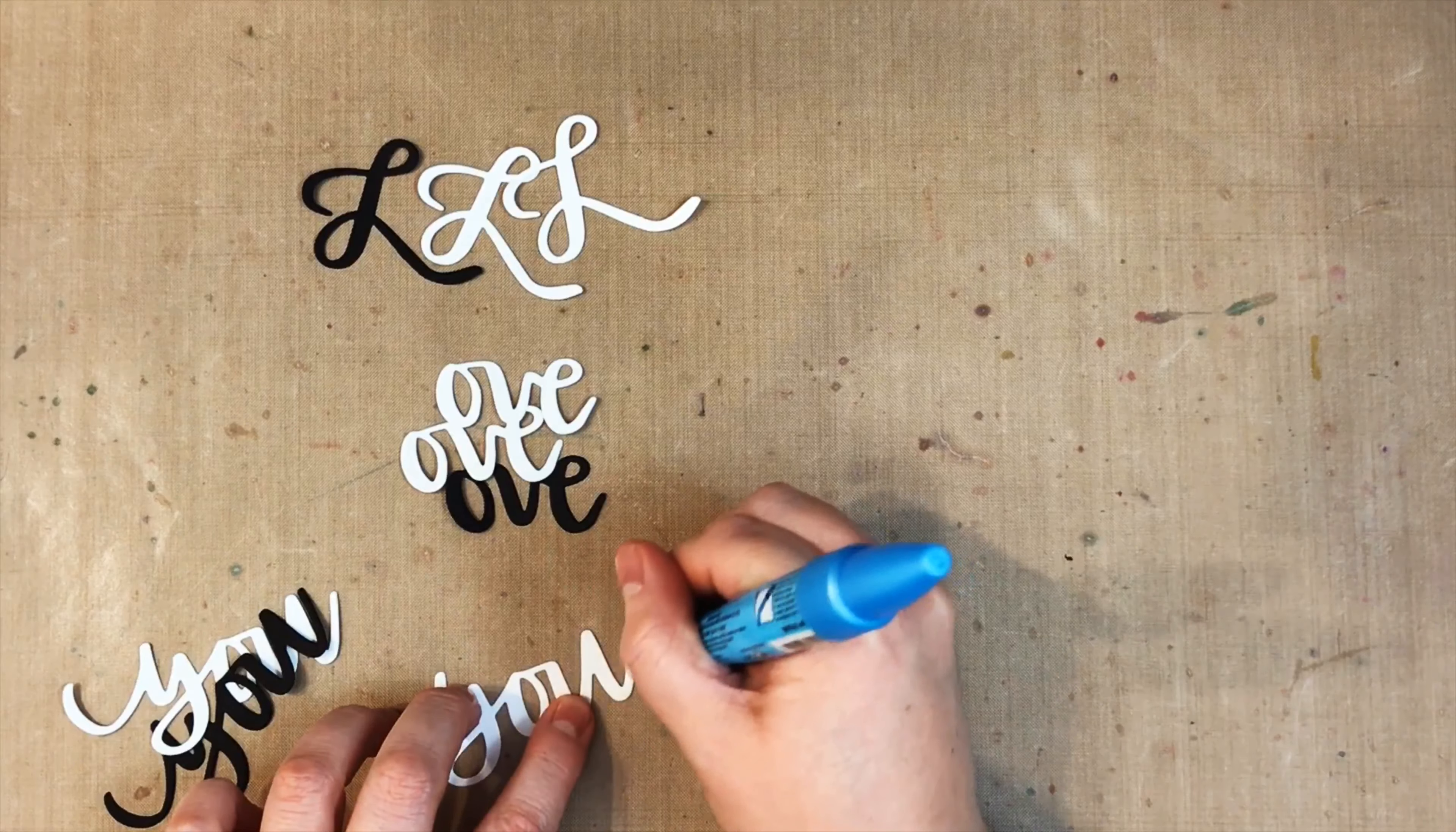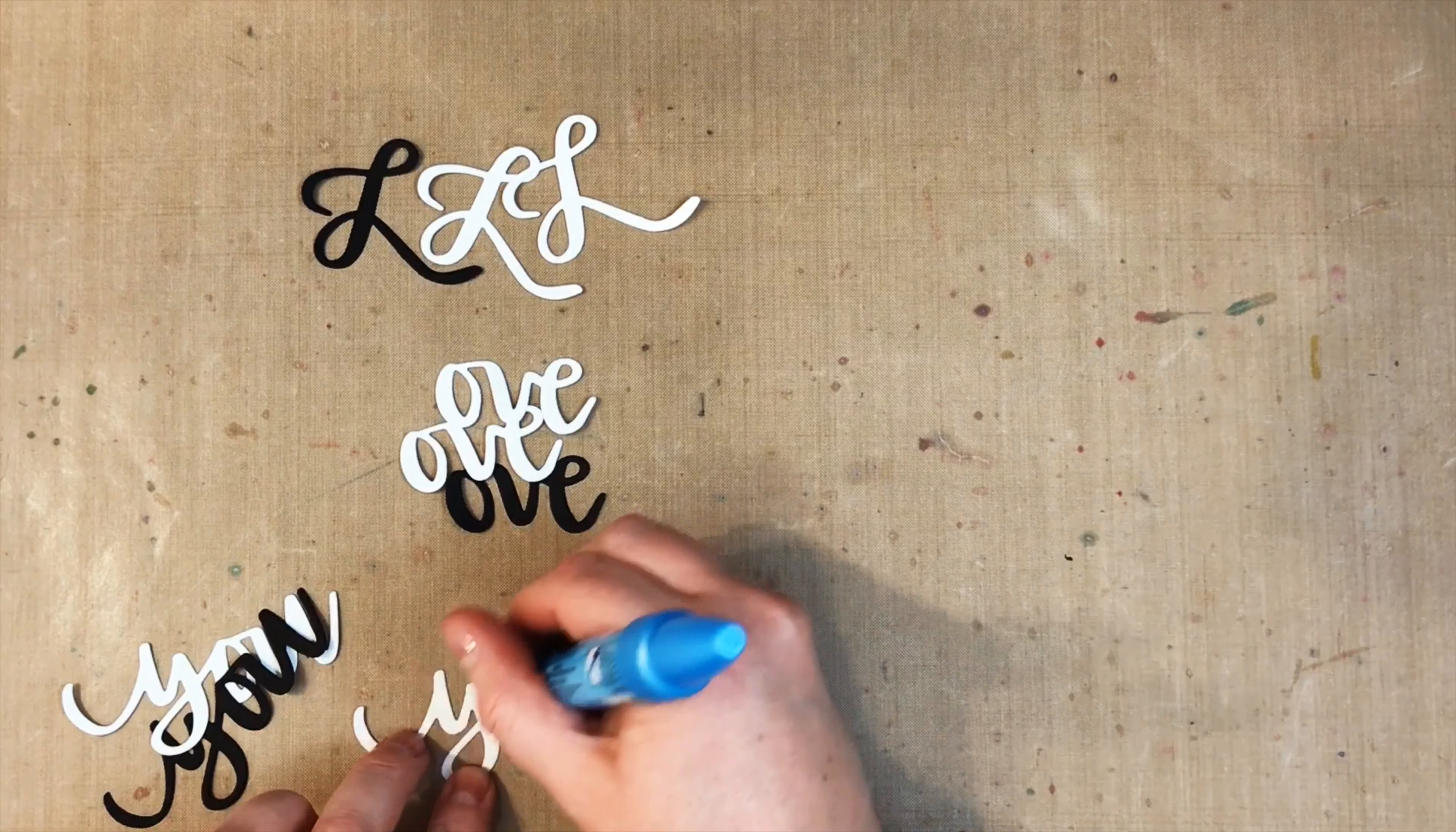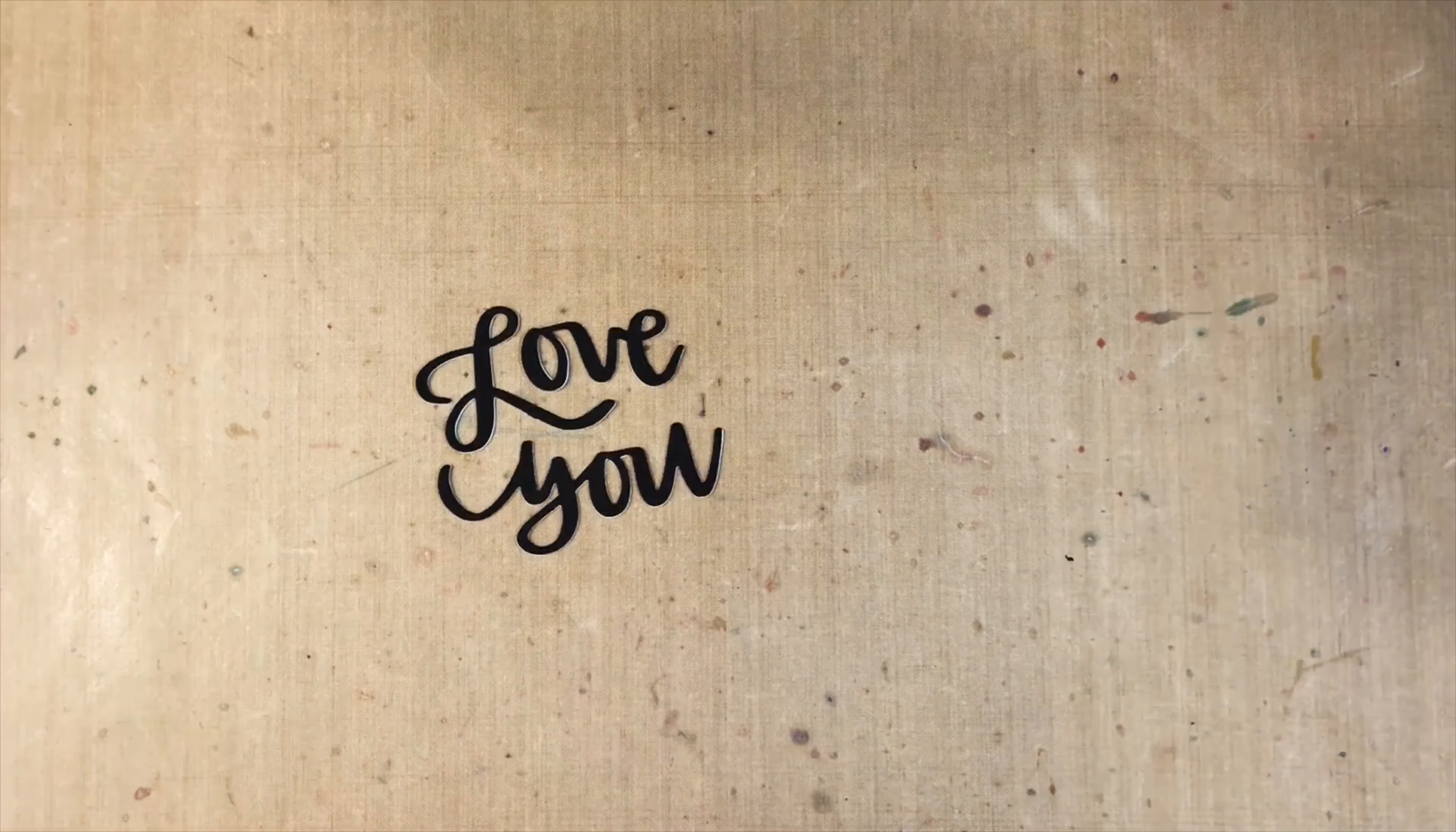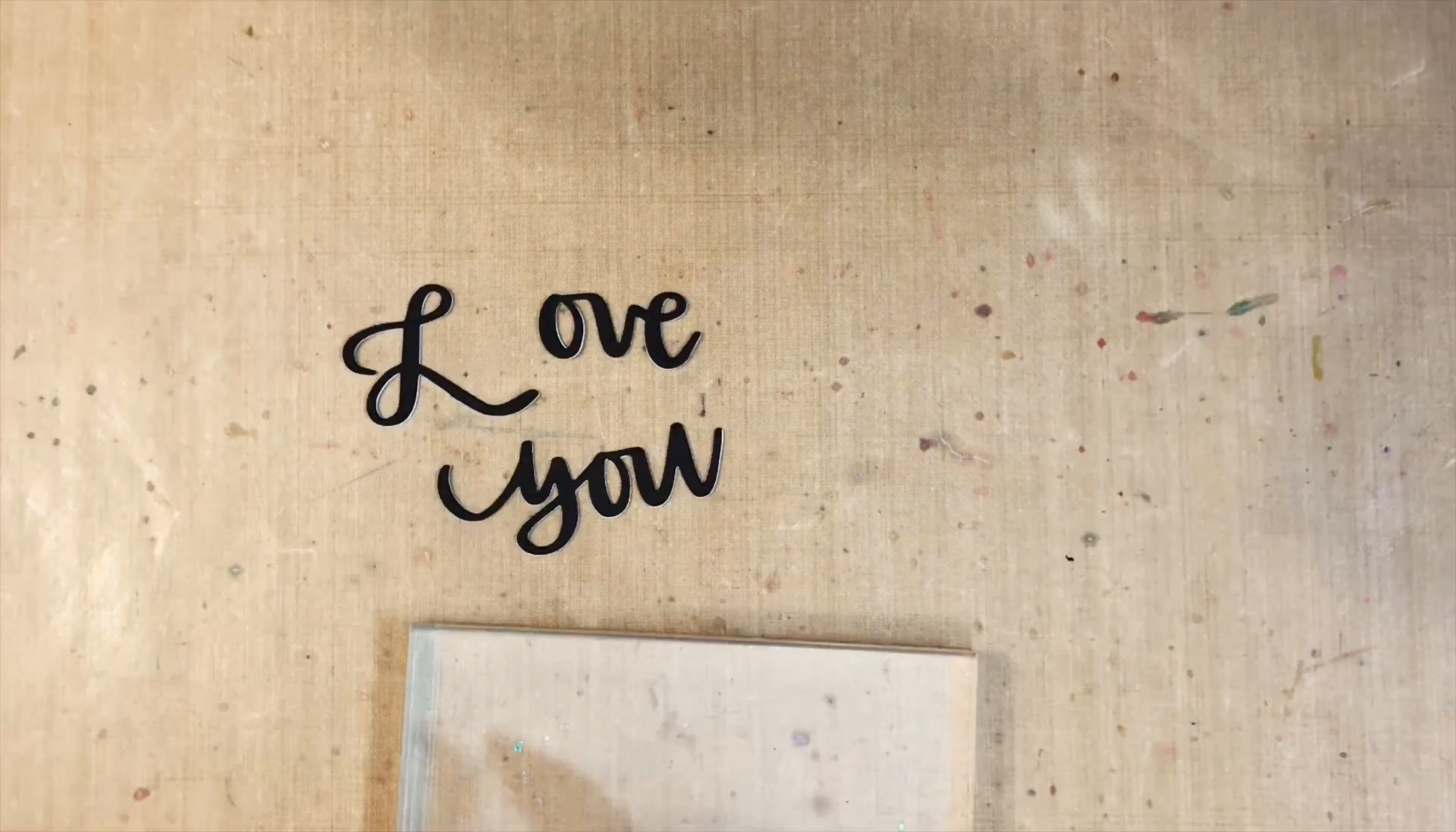I have this cute love you sentiment and I've die cut it three times and I'm going to glue it together to kind of give it some dimension. With my trusty glue pen, I'm just getting those layers put together - two whites and a black. Once I've got those all glued together and you can see they're kind of dimensional, I want to give it a little bit of gloss.